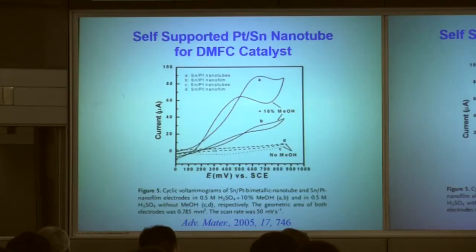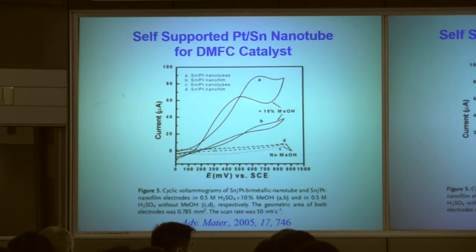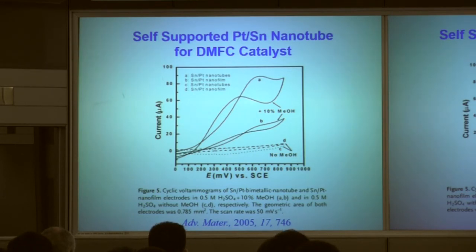Another advantage of this composite material is anti-poisoning. Usually, if some carbon oxide is on the platinum surface, the efficiency of the platinum atoms will decrease very much. But in this case, the surface has very good performance even when there is some carbon oxide in the solution.